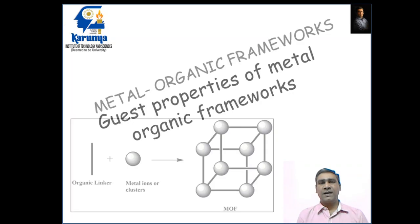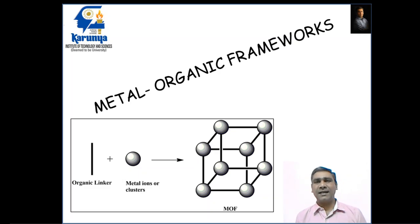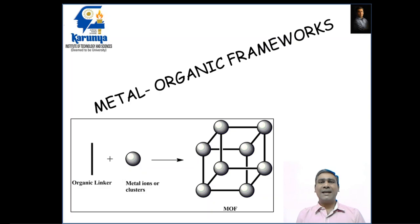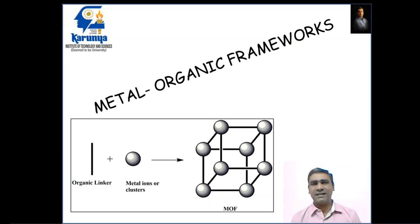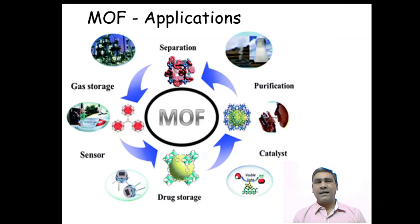Metal organic frameworks involve two things in their construction: one is the organic linkers or organic ligands, and the next one is the metal ions or clusters, also called hubs. These organic linkers and metal ions join together to form metal organic frameworks, also called metal organic porous materials, named differently by scientists across the globe, and they have several applications.